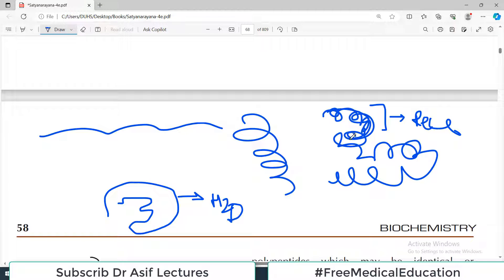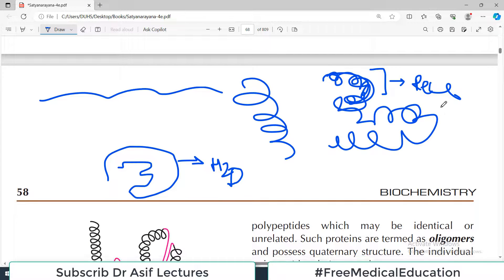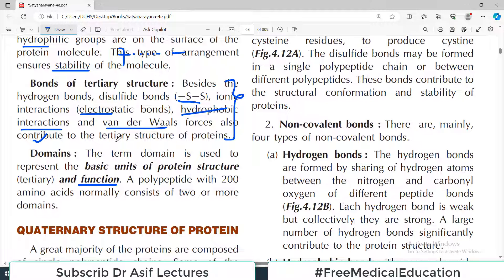Suppose there is a portion which activates a particular enzyme, then we name it the enzyme activating domain. So domain means the part of the protein along with its function.